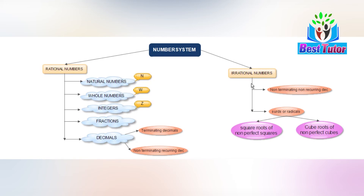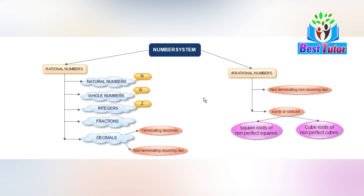Non-terminating non-recurring decimals cannot be expressed in the form of a fraction, so they belong to the set of irrational numbers. That means the decimal doesn't have any end — the number of decimal places continues indefinitely and there is no repetition in the decimal digits. Such a decimal is going to be an irrational number.